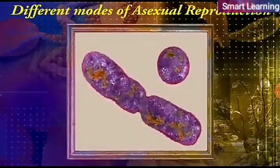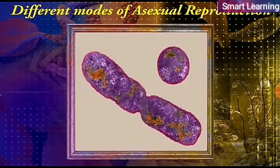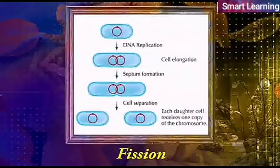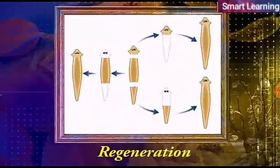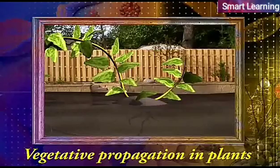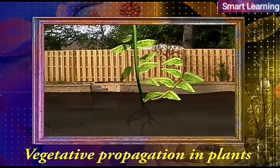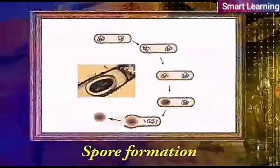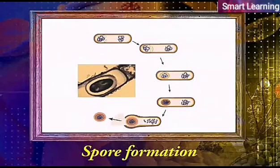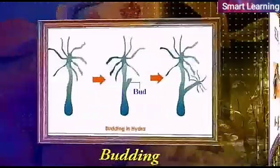There are different modes of asexual reproduction such as fission, regeneration, vegetative propagation in plants, spore formation, and budding.